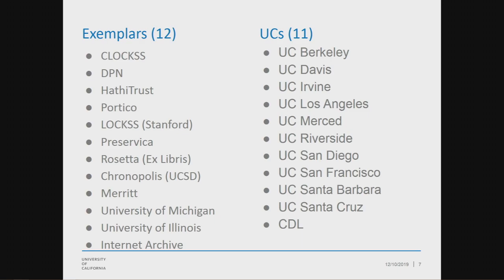We also interviewed all 11 UC groups. The California Digital Library is one of the UCs, though we later broke them out as a vendor because they fit better there, as you'll see in the report. Unfortunately, during our interviewing process the DPN was starting to wind down, so it was unfortunate to lose them as an exemplar, but we were able to interview them and hearing their story and process was very informative for our group.